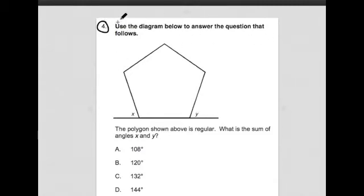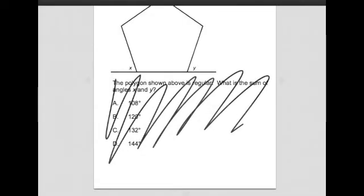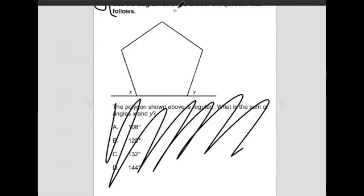It says here to use the diagram below to answer the question that follows, and it gives us the diagram, the question, and some information. I see this shape. What is it? It's got five sides. It's a pentagon. Pentagon, pent means five. It's a five-sided shape.